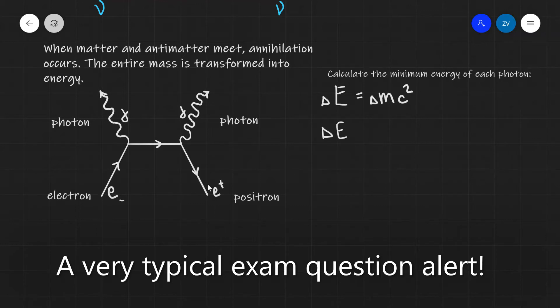will be equal to twice the electron or the positron mass times c squared. And this over here is the energy, the total change of energy. Because we're trying to find the minimum energy of one photon, we can divide this by 2. So essentially the 2 is going to cancel out. So delta E will be just equal to the mass of an electron times c squared.